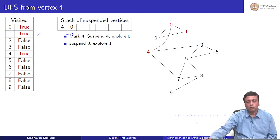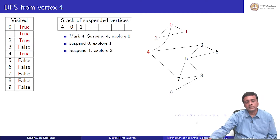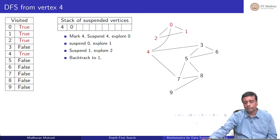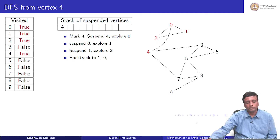Now I explore 1 and find it has only one unexplored neighbor, namely 2. So I suspend 1 and start exploring 2. When I look at 2, it has no neighbors left to explore because its only two neighbors, 0 and 1, have already been visited. So I start moving back — I backtrack from 2 to the most recently visited vertex, which was 1, and see whether 1 has anything more to be done. But 1 has nothing more because both its neighbors have been visited. So I backtrack to 0.